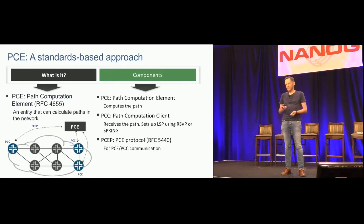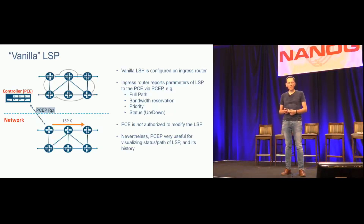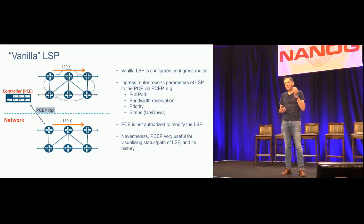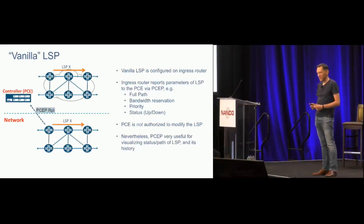In a network there are three types of LSP from the PCEP point of view. A 'vanilla' LSP could have been configured on the ingress router months or years ago using traditional CLI config. When you turn on PCEP and attach a controller, all such LSPs are automatically reported to the controller via PCEP. The controller becomes aware of their existence, attributes, precise path across the network, and bandwidth reservation if it's an RSVP LSP. From a visualization standpoint, this is useful — you can see the LSP path in the controller UI rather than checking CLI on each ingress router.